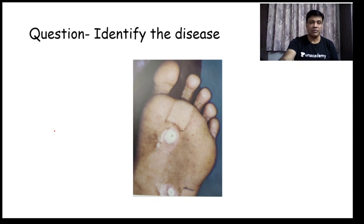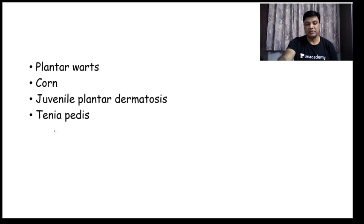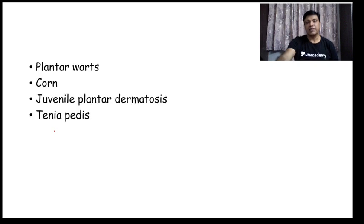Next question: identify the disease. You are looking at the leg or foot. Your choices are plantar warts, corn, juvenile plantar dermatosis, and tinea pedis. The correct answer is this is a clinical presentation of plantar warts. Corns are usually seen at pressure points, and these are not pressure points on the leg.